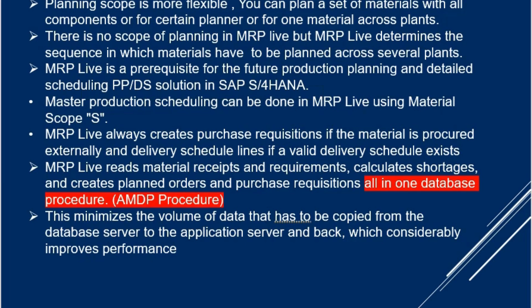We have already discussed the low-level code — there is a separate video if you want to understand it further. The low-level code helps to sequence which material has to be planned across all plants. Although there are multiple plants, it tries to do that in the shortest time and give results across all of them.